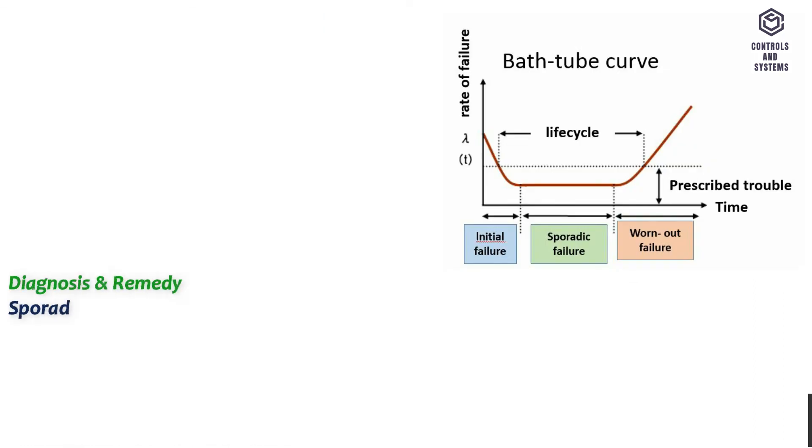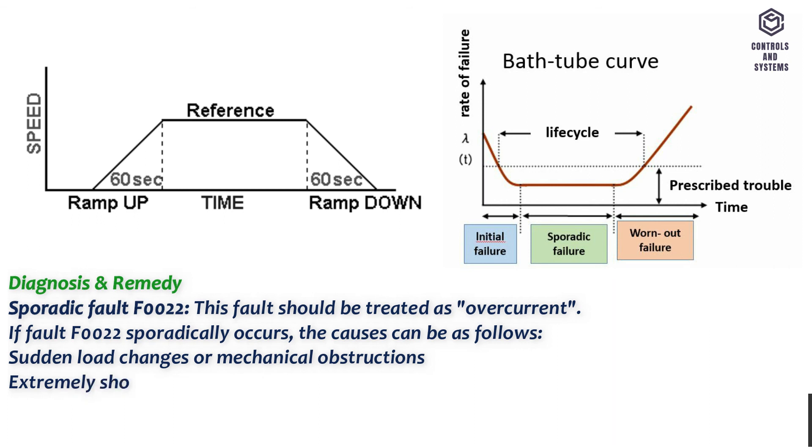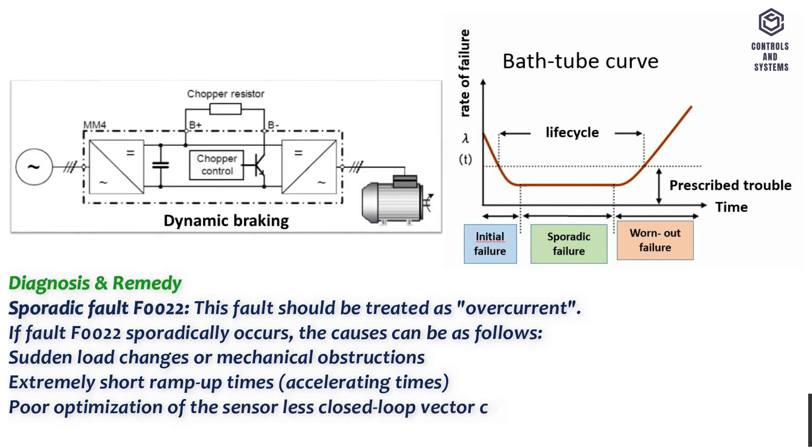Sporadic fault F0022: This fault should be treated as overcurrent. If fault F0022 sporadically occurs, the causes can be as follows: sudden load changes or mechanical obstructions, extremely short ramp up times or accelerating times, poor optimization of the sensorless closed loop vector control, incorrect braking resistor is installed with an excessively low resistance.